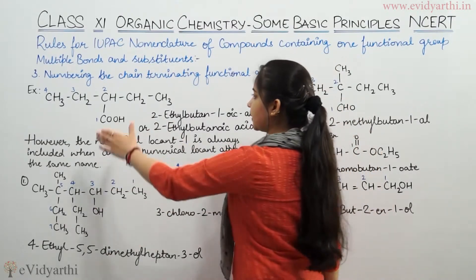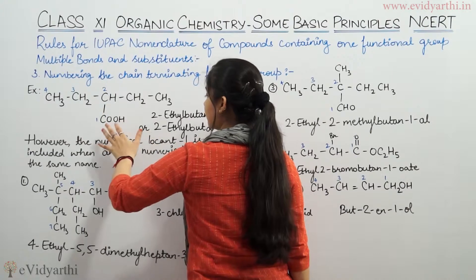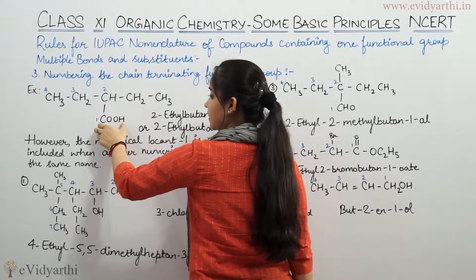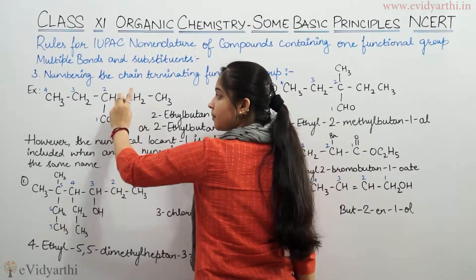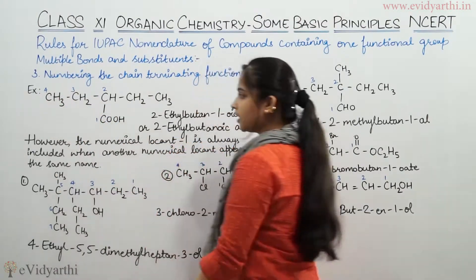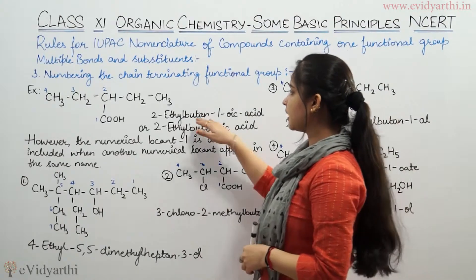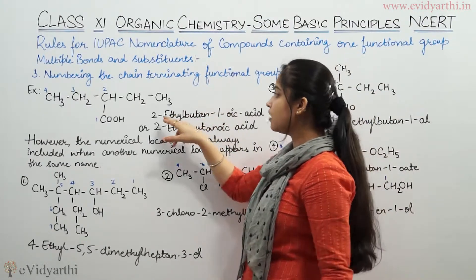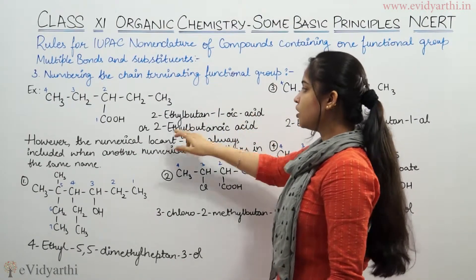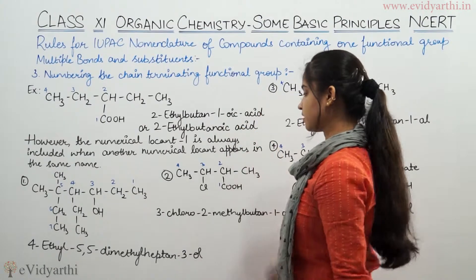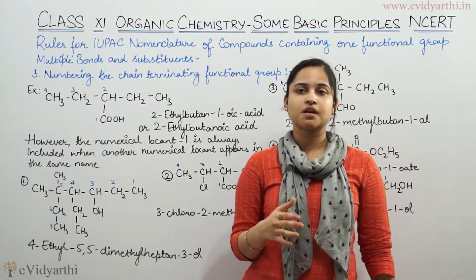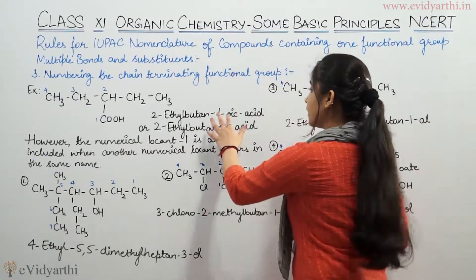Just like I have shown in this example — I have numbered from COOH because COOH has one carbon. So I will include this carbon in the parent chain. I have numbered from 1, 2, 3, 4. The parent chain has 4 carbon atoms here, giving us 2-ethylbutanoic acid, or more precisely 2-ethylbutane-1-oic acid.